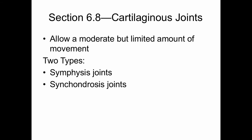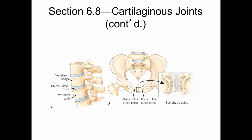Now let's discuss cartilaginous joints. These allow a moderate but limited amount of movement. There are two types: symphysis joints and synchondrosis joints. Cartilaginous joints have no joint cavities and are classified as amphiarthritic. In symphysis joints, fibrocartilage in the form of a disc unites the bodies of two adjacent bones — for example, the joints between the vertebrae showing the intervertebral disc, and the symphysis pubis, where cartilage is present between the bony structures.